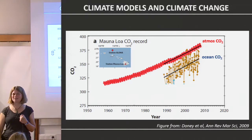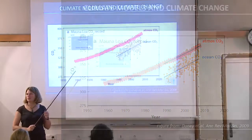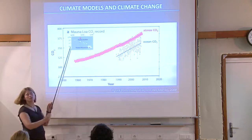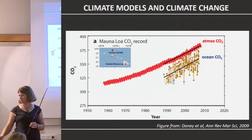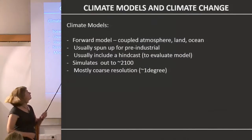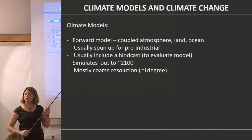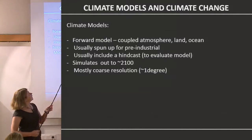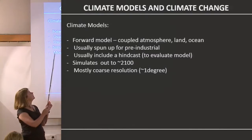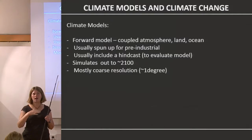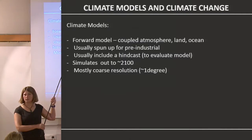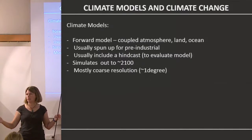You've all seen images like this: an increase in atmospheric CO2 and an increase in ocean CO2 — one from atmospheric measurements, one from ocean station ALOHA. Models are being used to understand what will happen in the future. These climate models include the atmosphere, some land, and the ocean. They're usually spun up to pre-industrial conditions and then simulated to the year 2100 with various scenarios of how CO2 will change. Most are coarse resolution because running for that long is expensive — it could be as much as a 2000-year simulation.